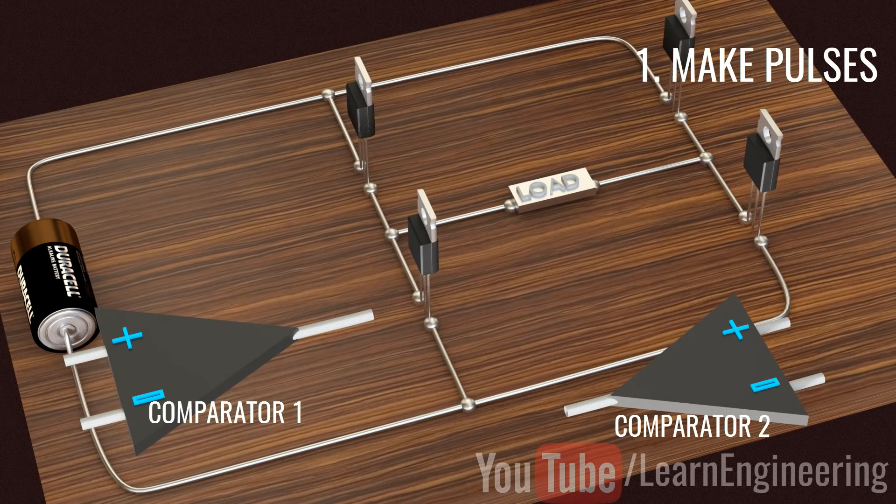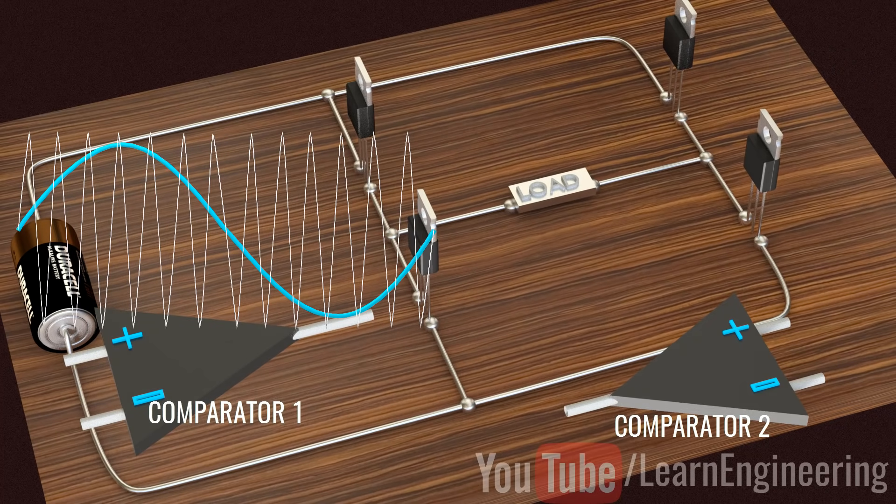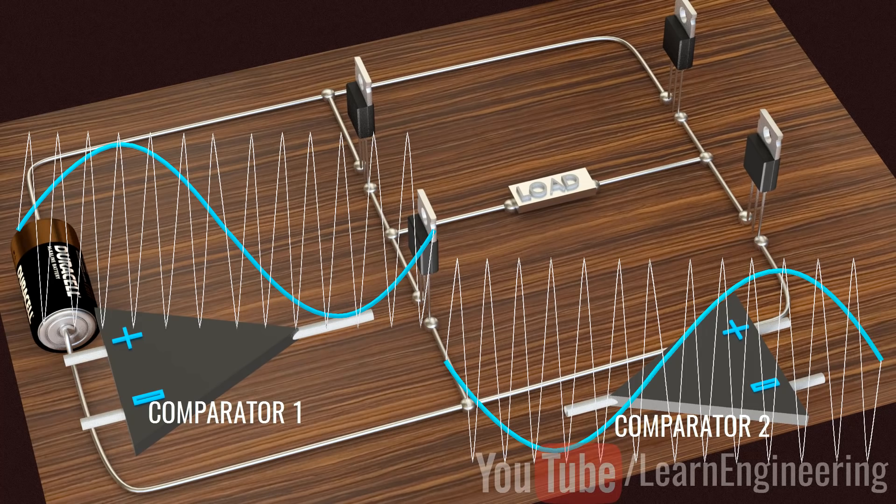Two comparators are used for this purpose. Comparators compare a sine wave with triangular waves. One comparator uses a normal sine wave and the other comparator uses an inverted sine wave.